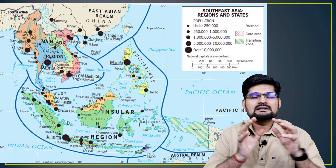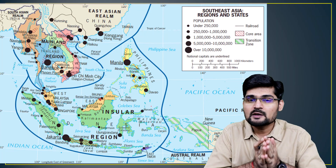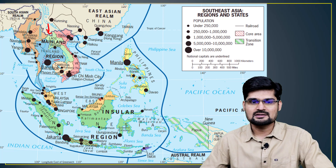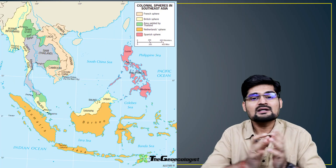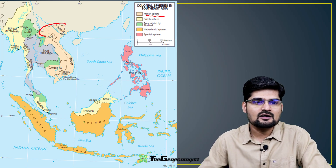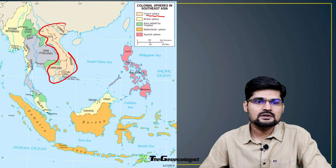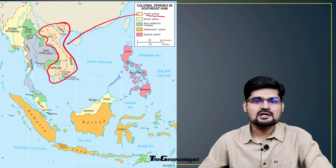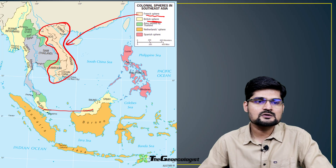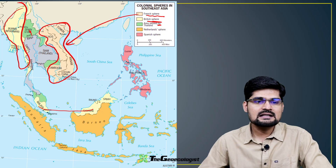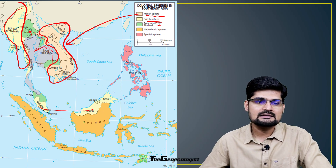Now let's observe the regional dimensions and divisions of this realm. The mainland Indo-China region had a distinct colonial status. The French sphere covered Laos, Cambodia and Vietnam. The British controlled area was largely Malaysia and Burma. The green area is what Thailand retained under its own control.